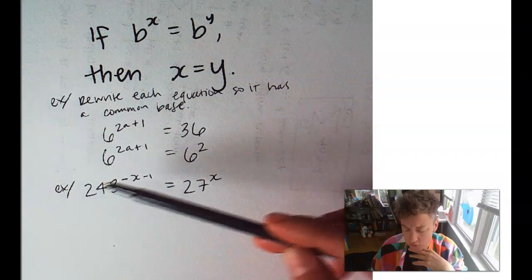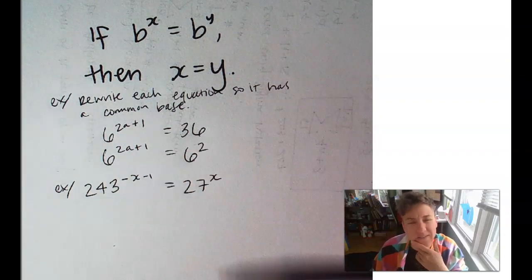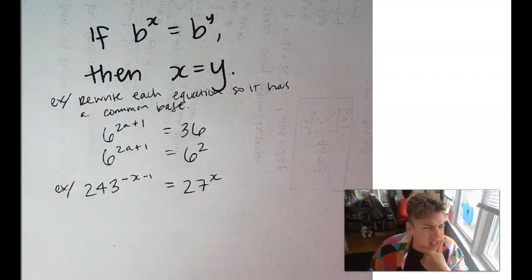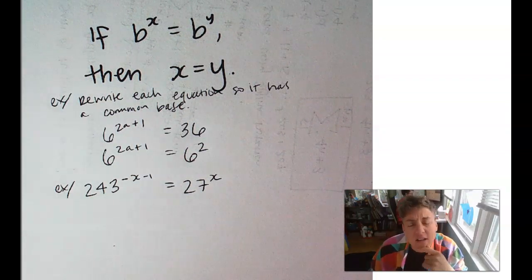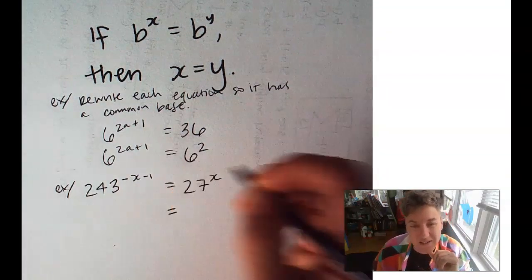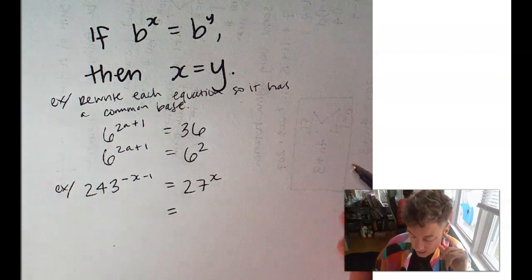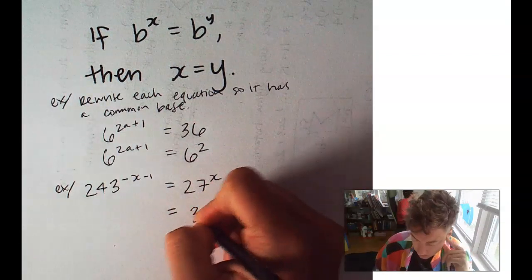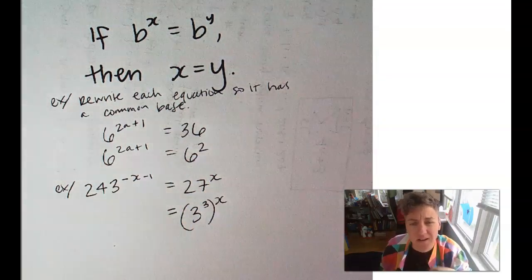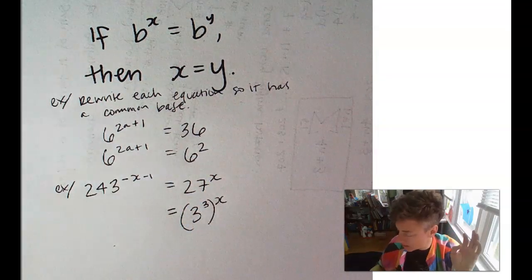What are we going to use for 243 and 27? 3. You're correct. We can write 27 as 3 cubed to the x. 3 times 3 is 9 times 3 is 27.